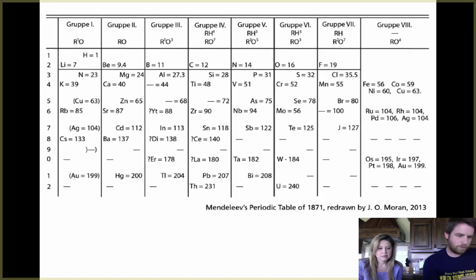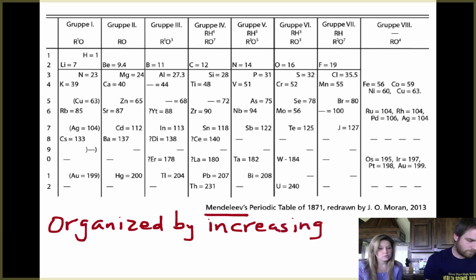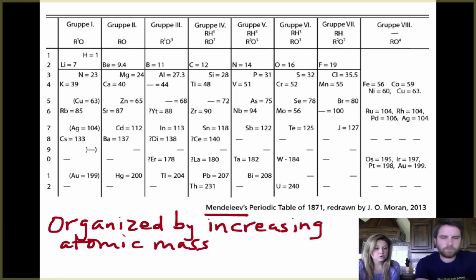His name was Mendeleev, and he took all the information that had already been discovered and he organized the periodic table by increasing atomic mass. So he thought mass was the best way to organize it. Now the groups or the rows that you can see in this one, he organized by similar properties. So elements that had the same reactivity, he put together.